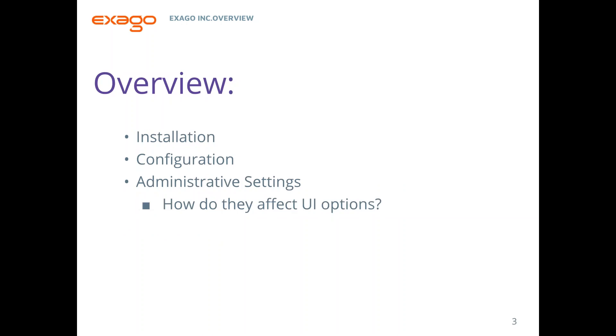For today's lab, we're going to talk about the installation process, how to configure a given scheduler, and the administrative settings we'll need to configure in the admin console. We'll flip-flop back and forth, turning on settings and then going to the UI to see how they affect what the user can do. Also, our next lab is going to be on July 11th — all about formulas and Express Views, so be sure to stop in.